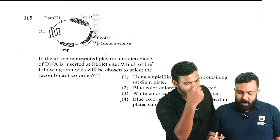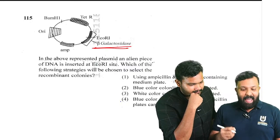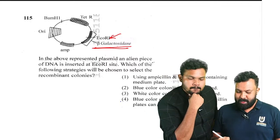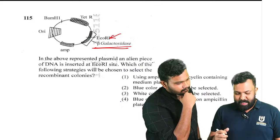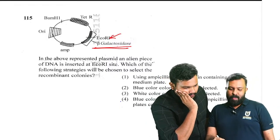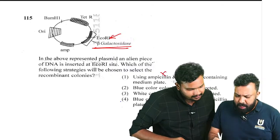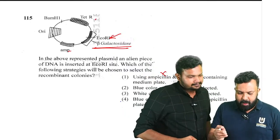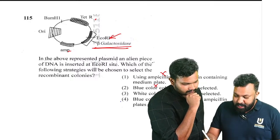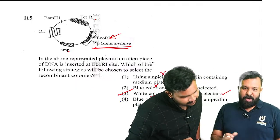Question number 115 from biotechnology applications: beta-galactosidase is used as a selectable marker. In the expression vector plasmid, an alien piece of DNA is inserted at the EcoR1 region, disrupting the beta-galactosidase gene. Which strategy selects recombinant colonies? By insertional inactivation, beta-galactosidase becomes inactive — colorless (white) colonies are recombinants and blue color colonies are non-recombinants. So white color colonies are selected as recombinants — option three is the right answer.